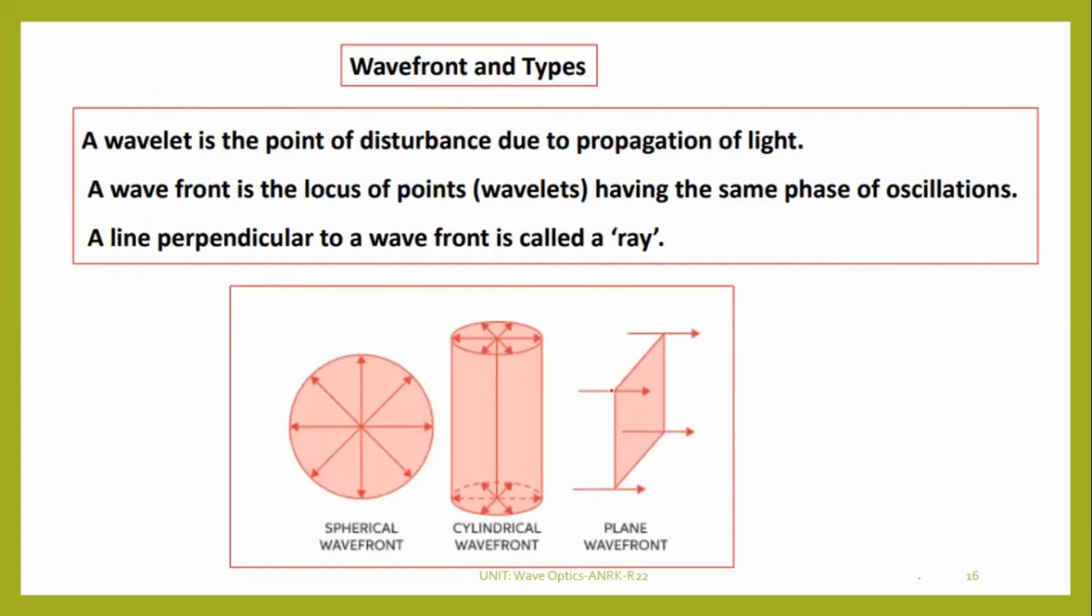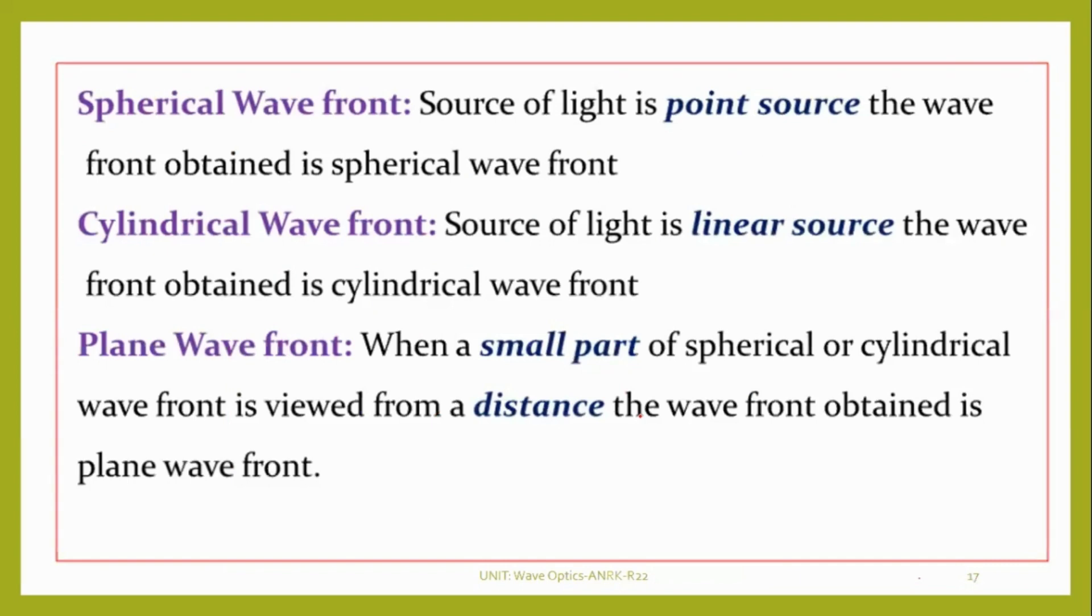We have different types of wavefronts. Generally, the light coming from the sun can be treated as a plane wave. Even in laboratories, if we are using normal light sources, by using lenses we can convert these spherical wavefronts and cylindrical wavefronts into plane waves.